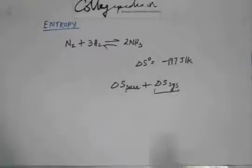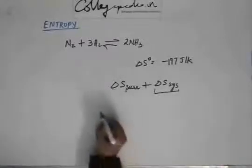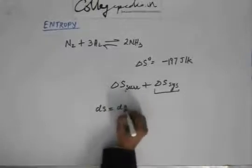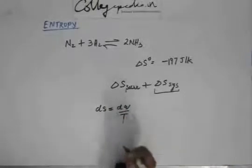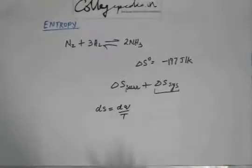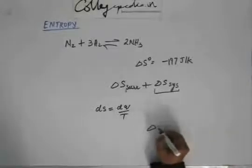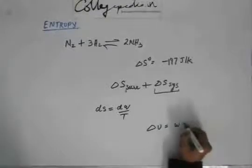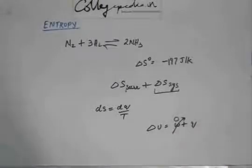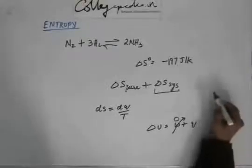That other way is to go back to the basic definition of change in entropy: dS = dq/T, where it is understood that dq is reversible. Now, from the first law of thermodynamics, dU = w + q. If we consider a process where volume remains constant (isochoric), then work done is zero, so dq becomes dU.